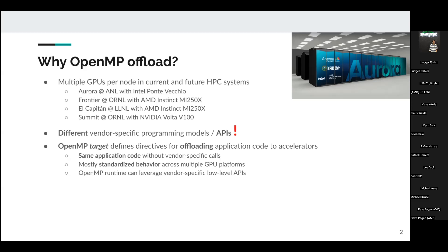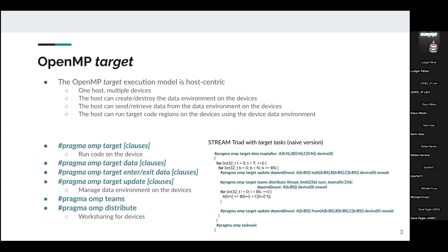OpenMP target provides several directives for creating data environments on devices from the host side, sending and retrieving data in the environment, updating the data, and running target code regions on the devices using the data environments on those devices.